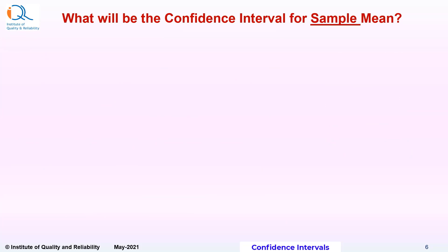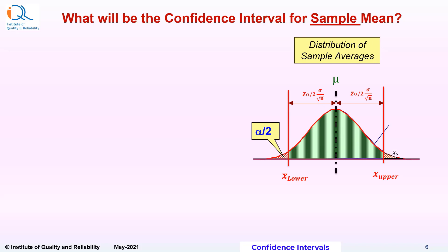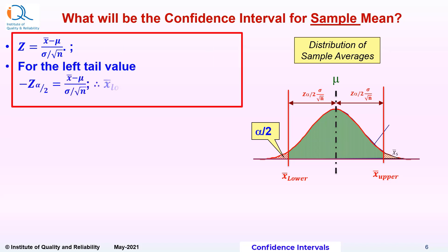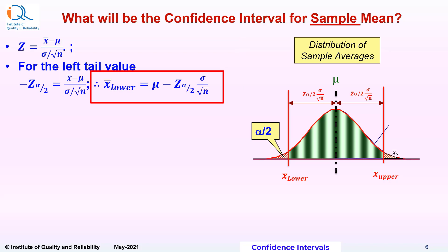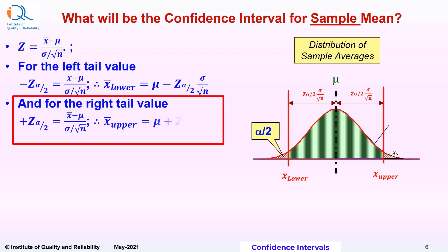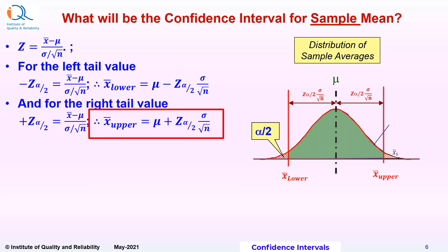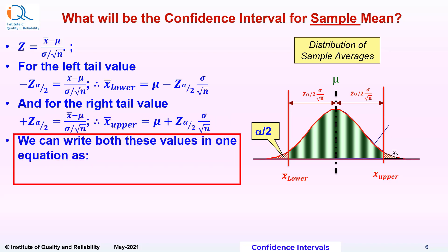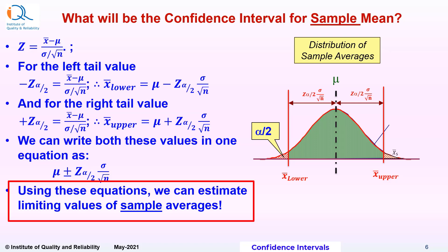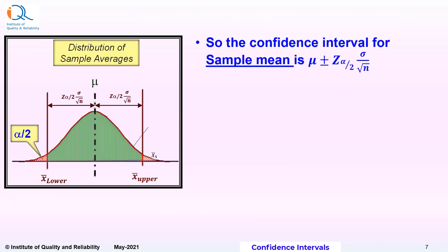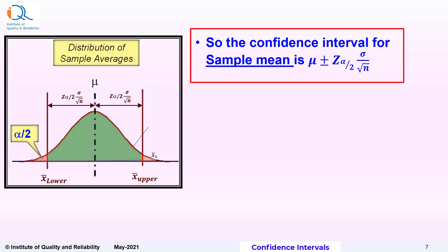Now let us determine the confidence interval for sample mean. Here is the distribution of sample averages as per central limit theorem. We know z is equal to x bar minus mu by sigma by square root n. Therefore, for the left tail value, minus z alpha by 2 is equal to x bar minus mu by sigma by square root n, and it follows that x bar lower equals mu minus z alpha by 2 sigma by square root n. Similarly, for the right tail, x bar upper will be equal to mu plus z alpha by 2 into sigma by square root n. We can write both these values in one equation as mu plus or minus z alpha by 2 sigma by square root n. Using these equations, we can estimate limiting values of sample averages. The confidence interval for sample mean is mu plus or minus z alpha by 2 sigma by square root n.